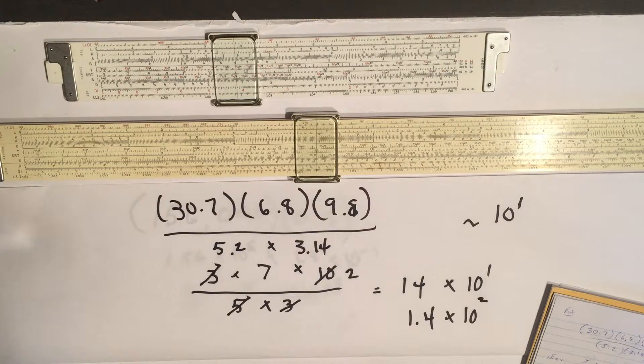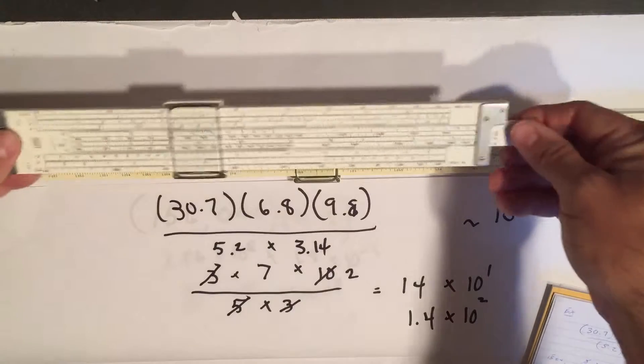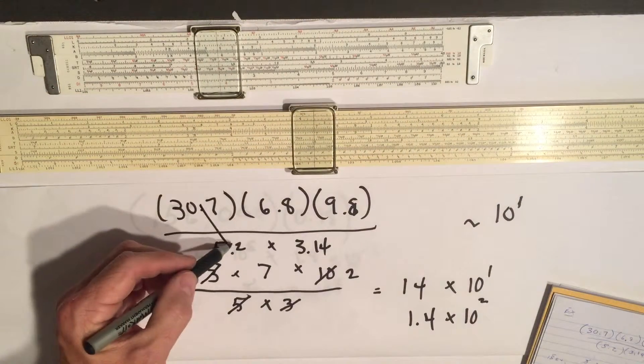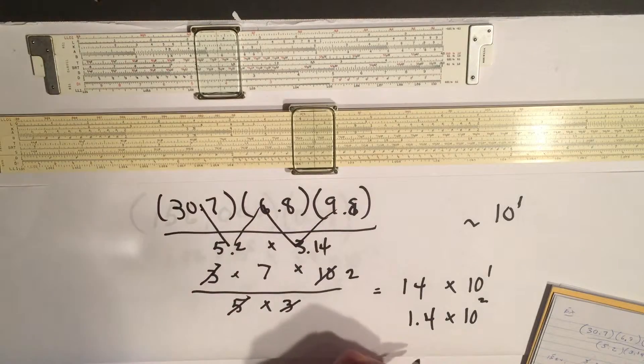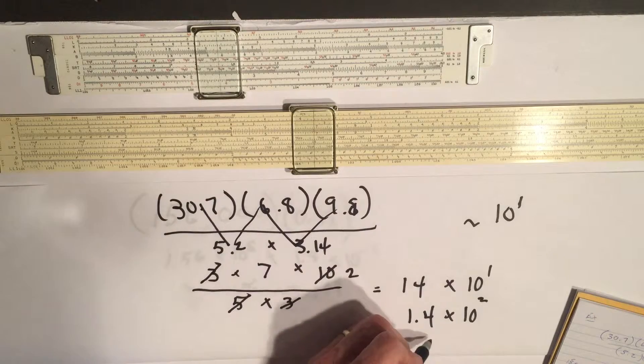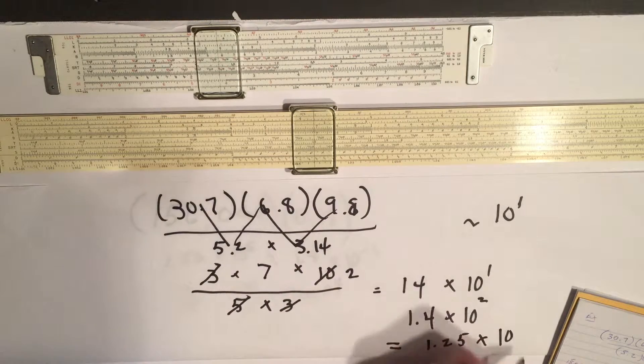And I won't do this, but if you went through on one of these slide rules and went through the process of taking this divided by this times this divided by this times that, you'll get the answer of a more precise answer to two significant digits: 1.25 times 10 to the 2.